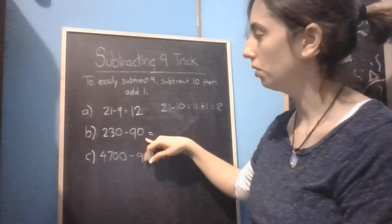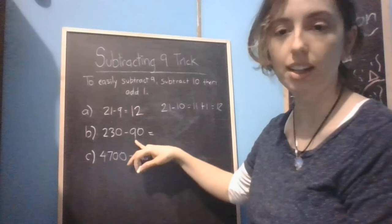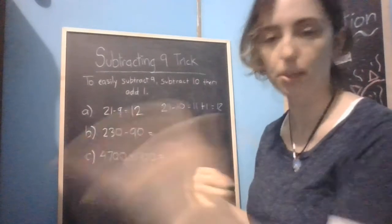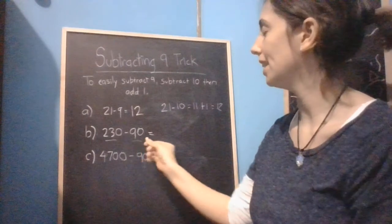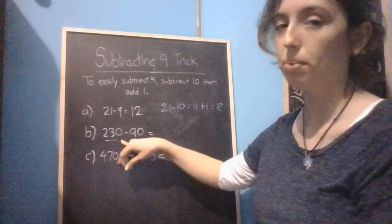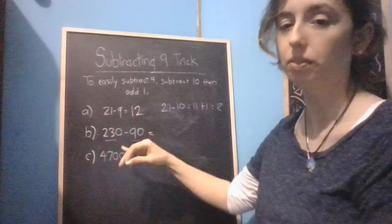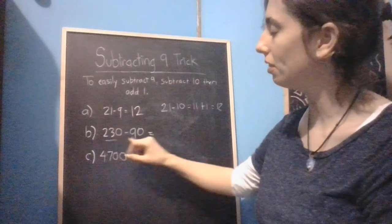Now what I wanted to do is show you what happens when you're dealing with numbers like 90. It's just like subtracting 9 but just on a bigger scale. So we've got 230 minus 90. What we're going to do here, same principle, but because we're working one place value up in both 230 and 90, it's just like 23 and 9.